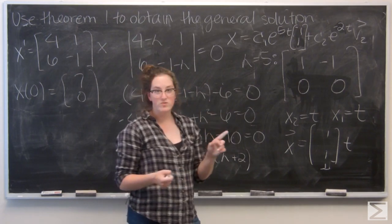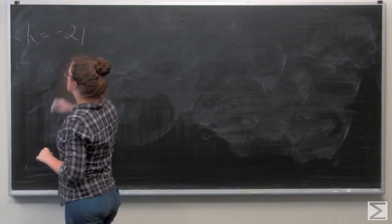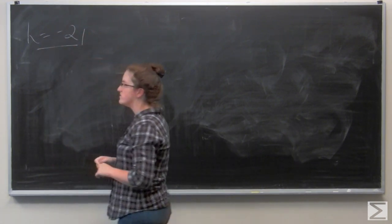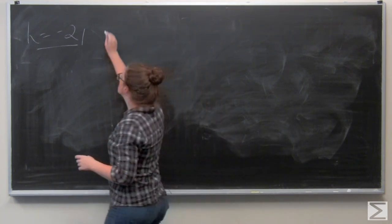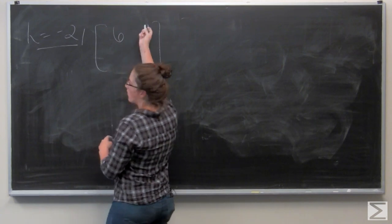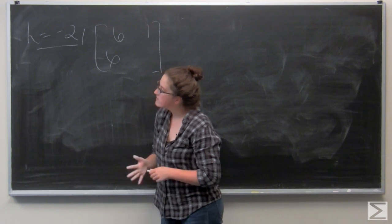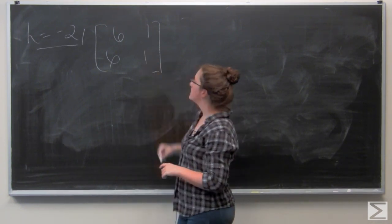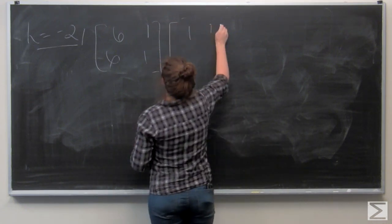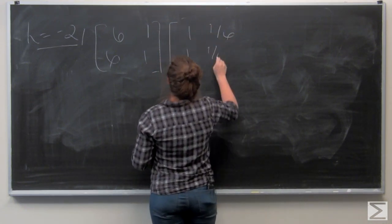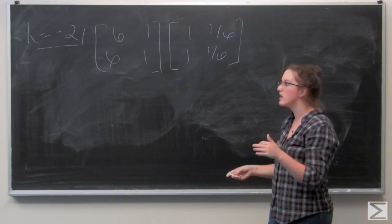And then let's move over to the other board to find the second eigenvector for lambda equals negative 2. So now I'm going to have 4 plus 2, 6. And then 1 in the top row. And then 6 and negative 1 plus 2 which gives me 1. So I'm going to reduce both rows by a factor of 6. And then I can subtract the first row from the second to clear the bottom row.